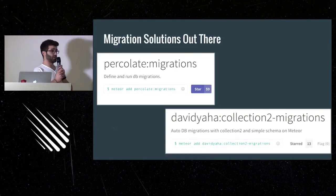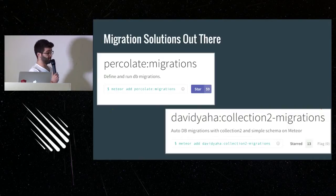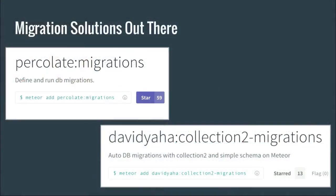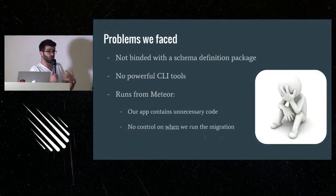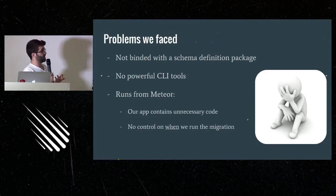So we searched and we found two packages: one by Percolate, which you probably know, and one by my fellow David here. But those packages — you can look them up, they might fit your project — for us they weren't enough. The main problem was that the Percolate migrations weren't bound to any schema definition, so we had to write everything manually. They didn't have powerful CLI tools — Percolate's CLI tool is deprecated — and in David's package it isn't built to run from a CLI, so we couldn't control when to run the migration.